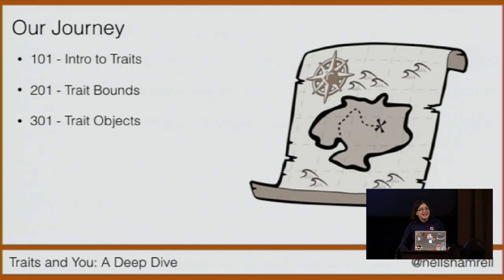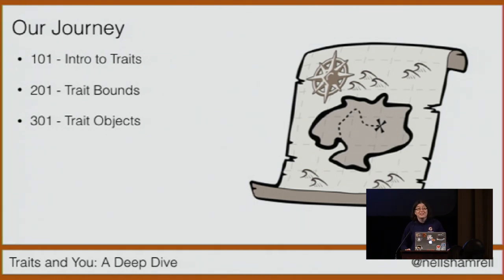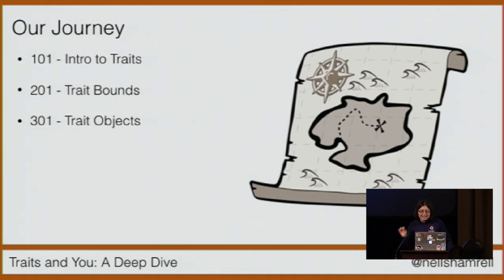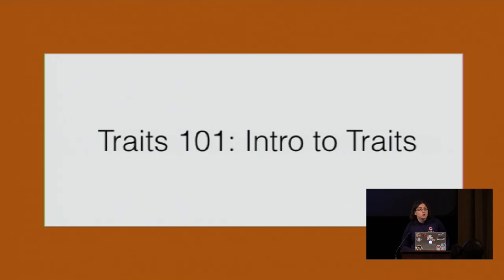I've divided our journey today into three stages. The first is Traits 101, where we'll cover the basics of them — how you make them, how you use them. Then will come Traits 201, where we will discuss trait bounds and what that allows you to do. And then finally, Traits 301 will cover the world of trait objects and how they allow you to take your Rust code to new heights. So no matter where you are in your Rust journey, I think you'll get something out of each one of these stages.